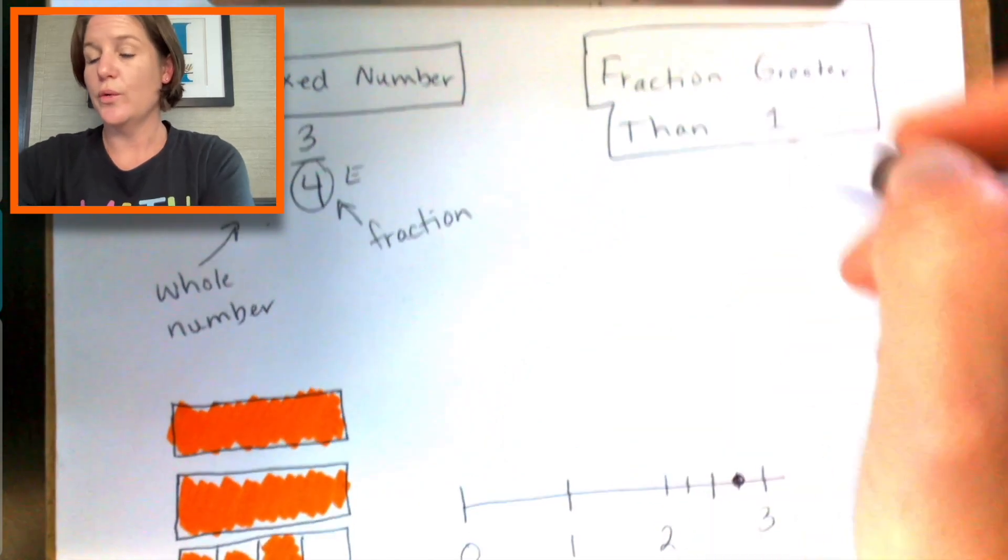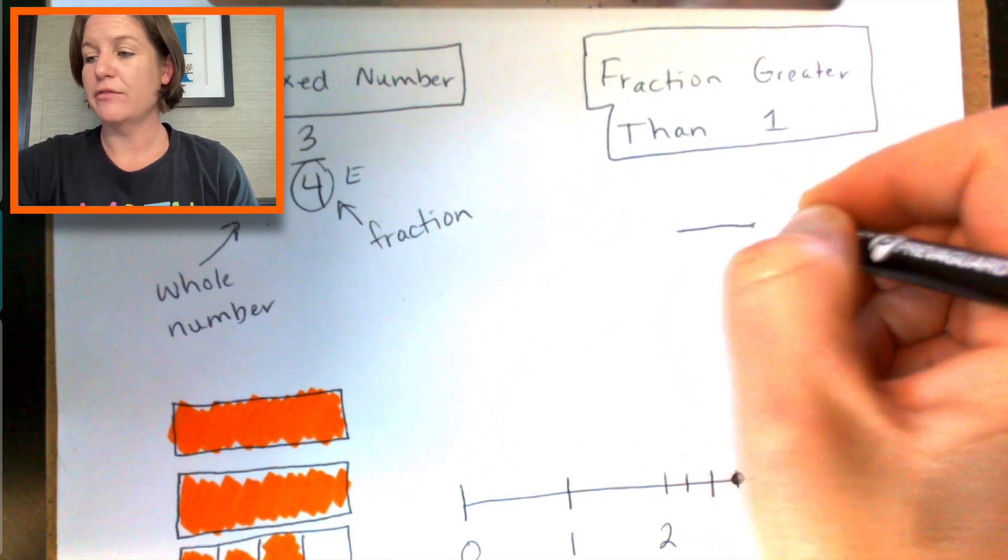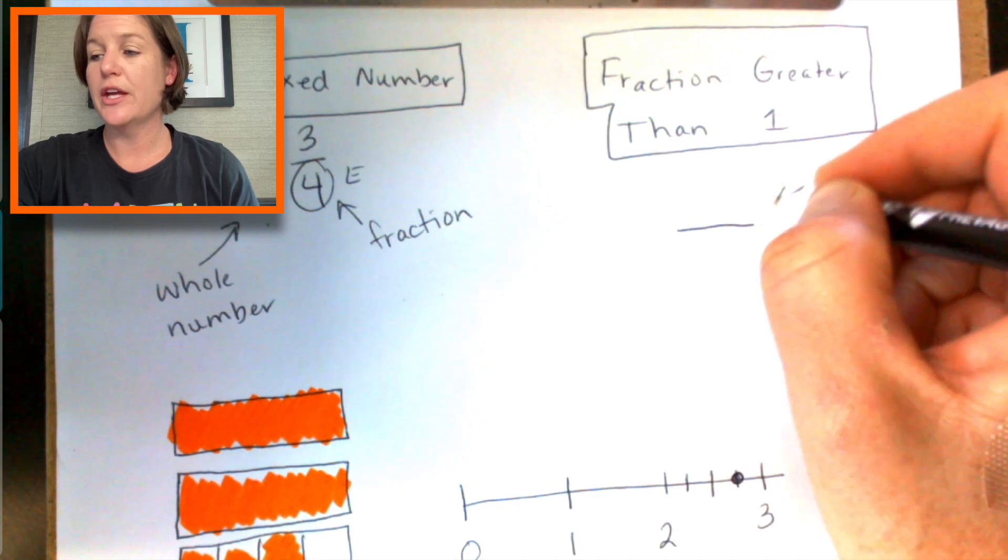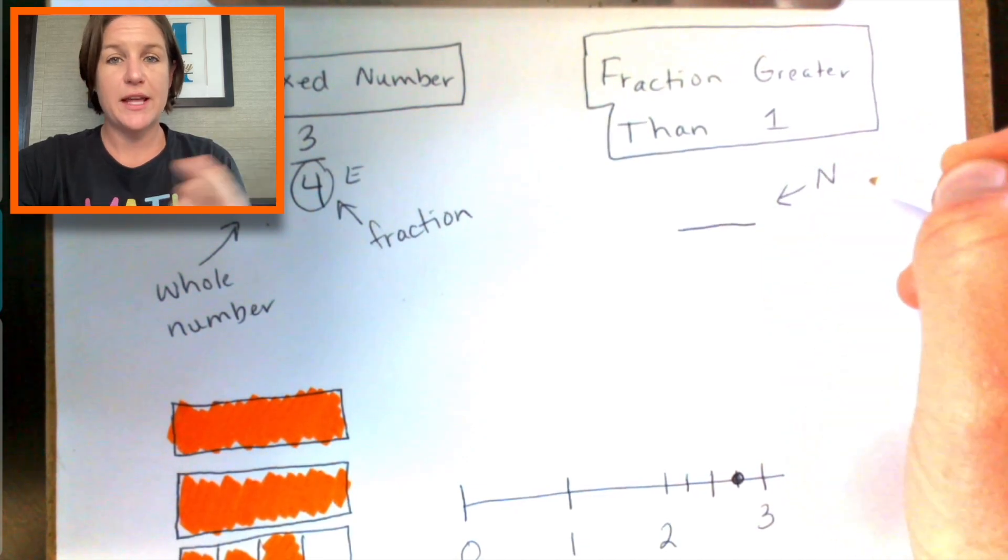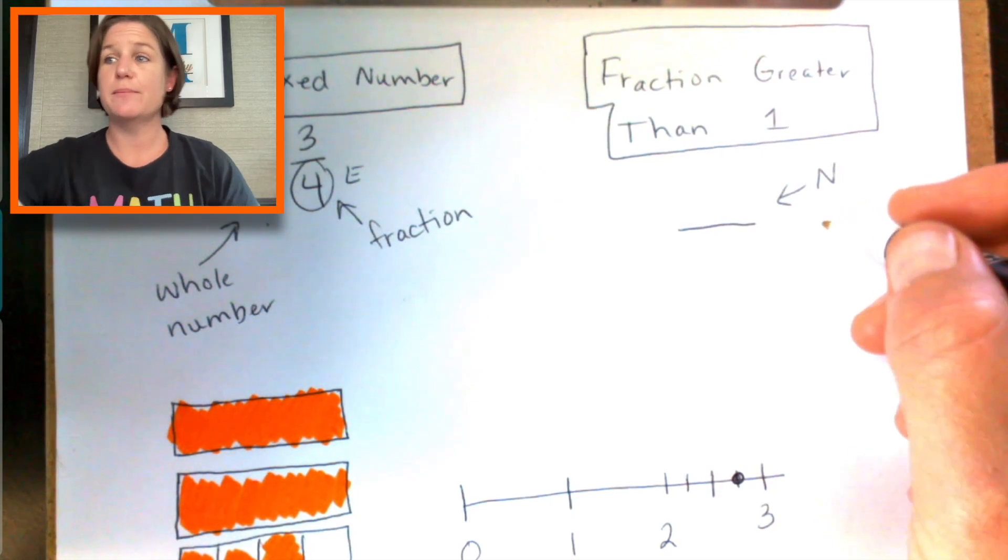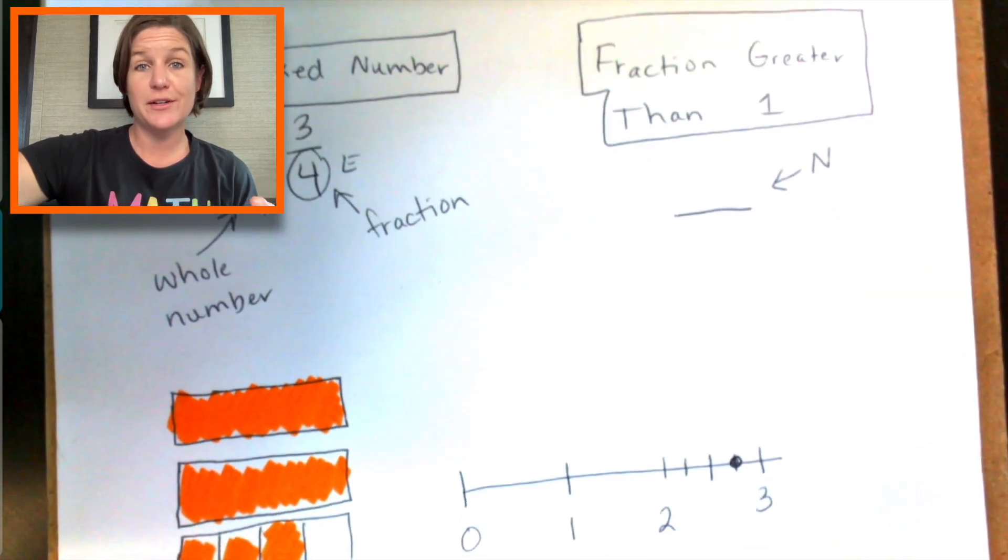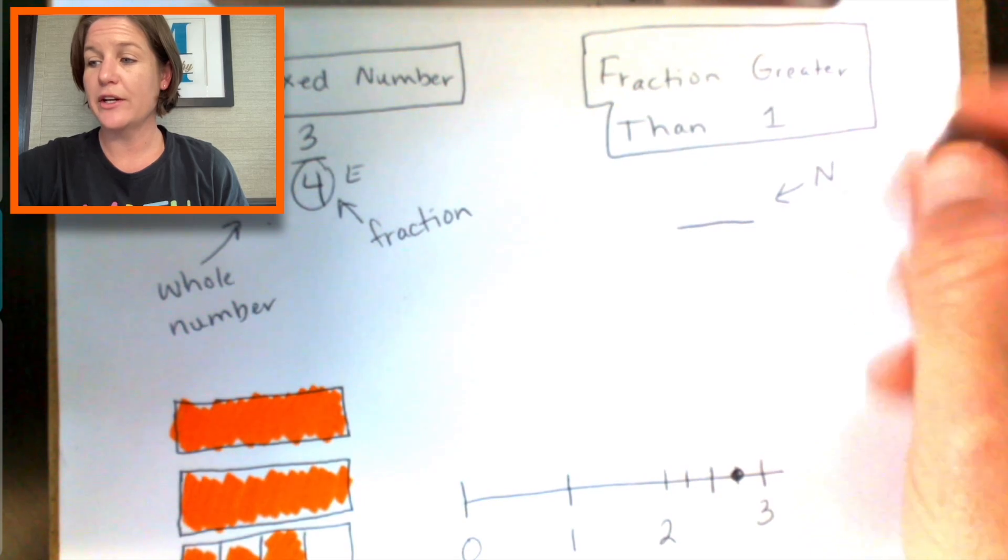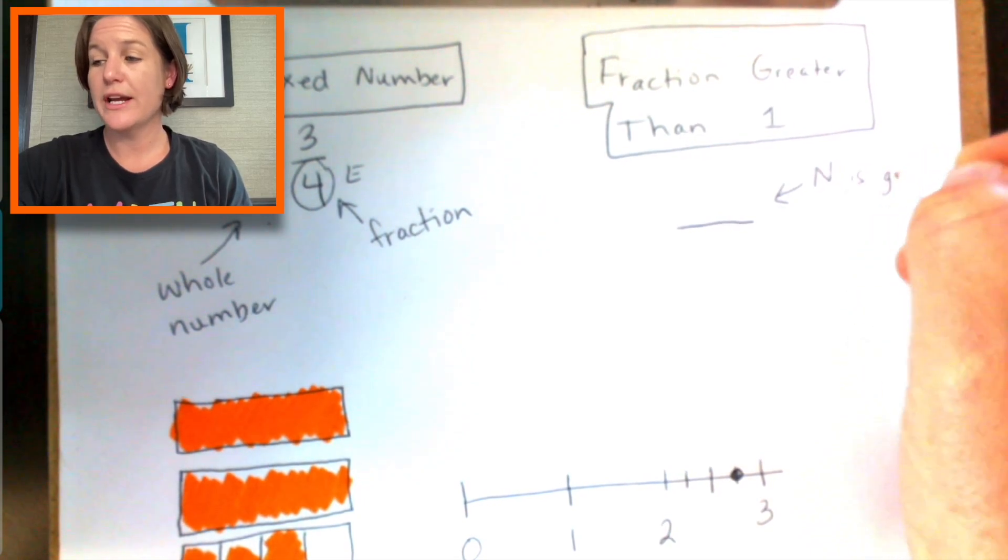So when we have that, a fraction greater than one is where the numerator—you see that number on top, that's called the numerator—it describes the amount that is being considered. So when that numerator is greater, greater than the...